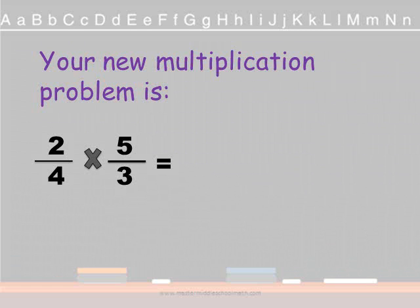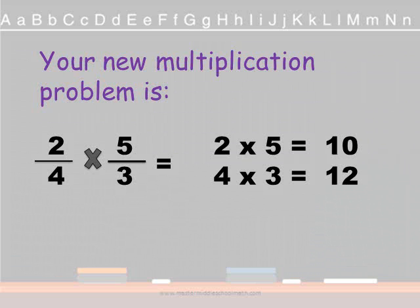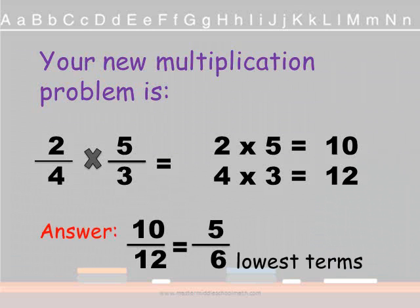So our new multiplication problem after we flip that second term is 2 fourths times 5 thirds. So remember, we're going to go straight across. 2 times 5 is 10, 4 times 3 is 12. So our new answer is 10 twelfths.